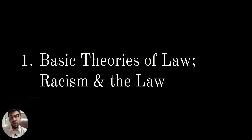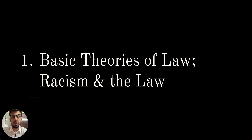The first chapter is basic theories of law and racism and the law. Today we will be discussing basic theories of law and how they relate to the issue of racism in the legal system. Legal theories are essential in shaping how judges make decisions and how laws are applied in practice. These theories offer different perspectives on the nature, source, authority and accountability of laws.